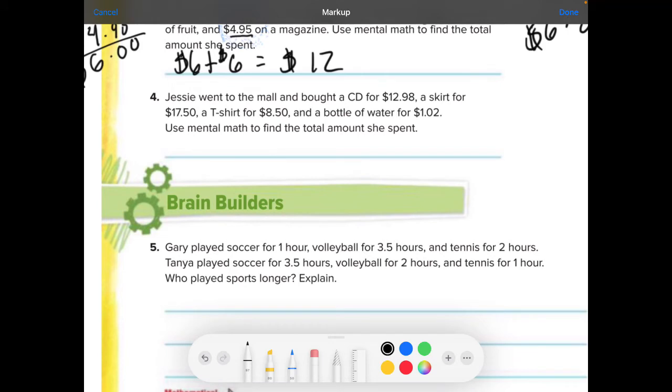Number four, Jesse went to the mall and bought a CD for this much money and a skirt for this much and a t-shirt for this much and a bottle of water for that much. Using mental math, find the total amount she spent. I can see that maybe these ones are going to work well together because that two is going to be able to bump it up to another dollar mark. So let's go ahead and I'm going to add 12.98 over here. Now you could probably do this in your head and that's okay if you do.